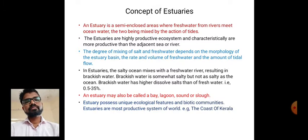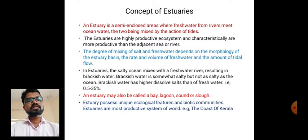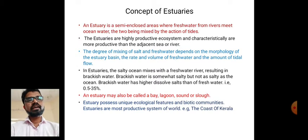The estuary is a semi-enclosed area where marine water habitat and freshwater habitat meet — where fresh water from rivers meets ocean water, the two being mixed by the action of tides. The place where rivers and ocean water meet is called the estuary. Estuaries are highly productive ecosystems.